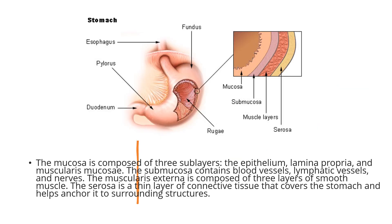The mucosa is the innermost layer and is composed of three sub-layers: the epithelium, the lamina propria, and the muscularis mucosa. The epithelium is the layer in contact with the stomach contents and is composed of different cell types.